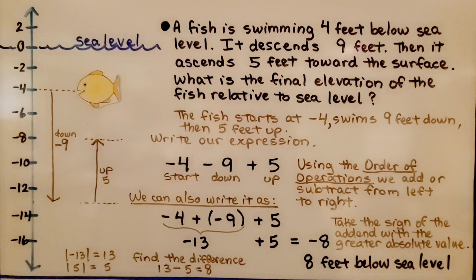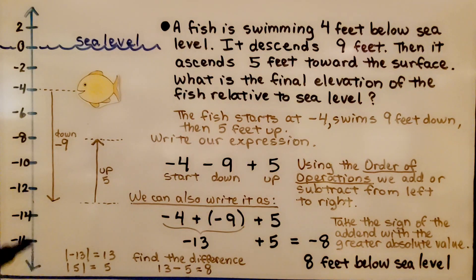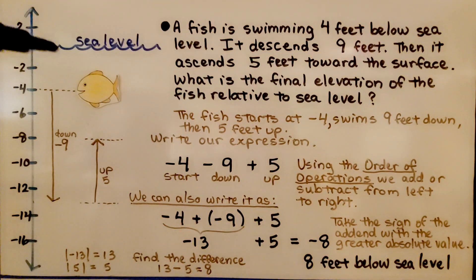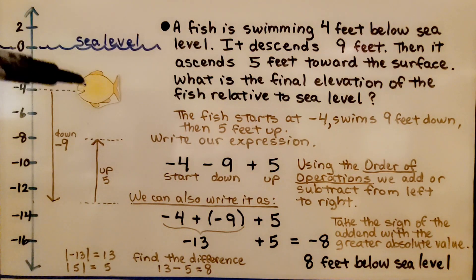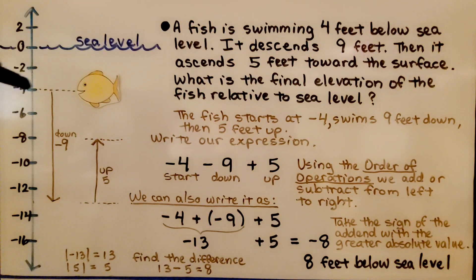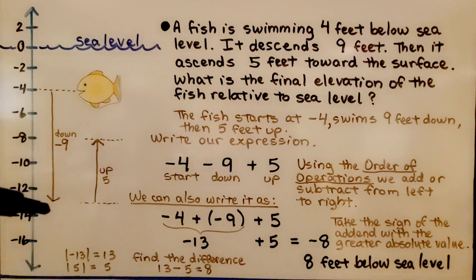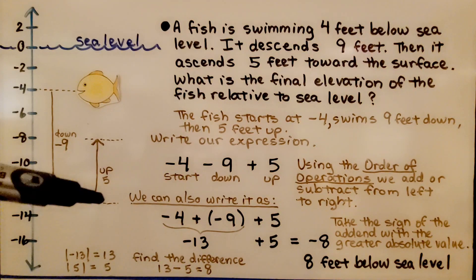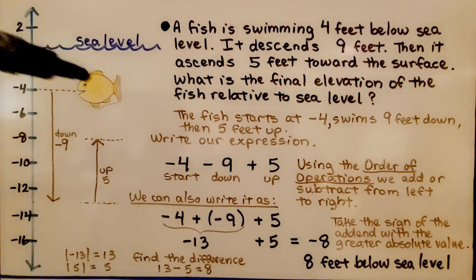We have a drawing for this one. We've got sea level, which is at 0. We have a vertical number line in increments of 2s, and we have a fish. A fish is swimming 4 feet below sea level. It descends — that means it goes down 9 feet — then it ascends, which means it goes up 5 feet towards the surface.